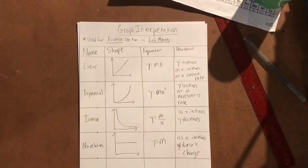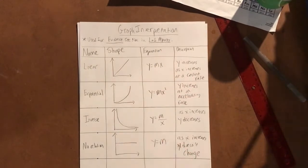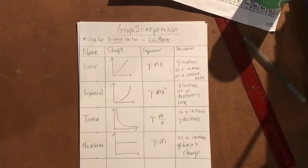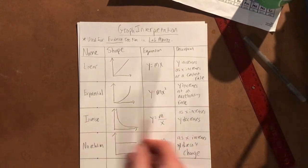Whenever you have a graph in your lab reports from now on, write down 'use for evidence section and lab reports.' There's four graphs we need to know. In our lab reports we might end up with either one, and if you want to pause right now and copy down this table, you could do that.